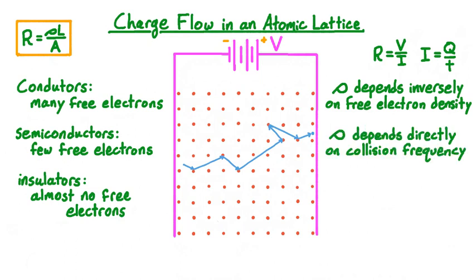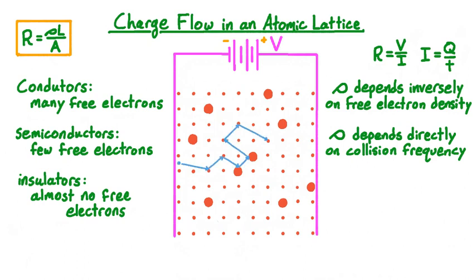To get a feel for this idea, let's consider two examples of atomic lattices where we would expect a larger collision frequency than the regular lattice. In this lattice, we've represented the presence of several impurity atoms with larger red dots. These impurities could occur naturally or be added intentionally in the process of making an alloy. The presence of these impurities disrupts the regularity of the lattice, resulting in more electron collisions. The impurities caused the electron to take a much more roundabout path across the lattice, resulting in a much longer time to cross the lattice, hence lower current and higher resistance.